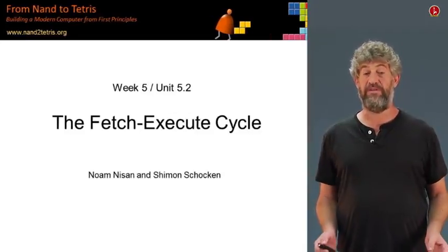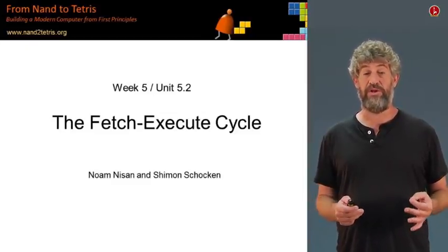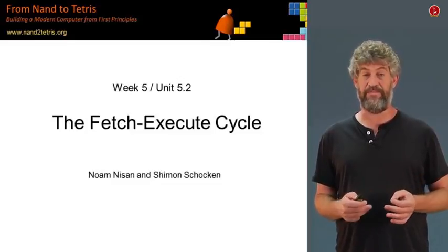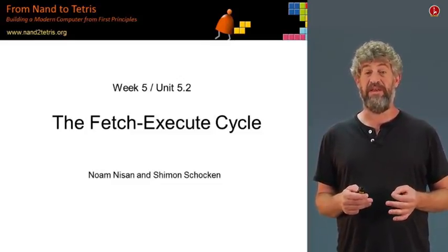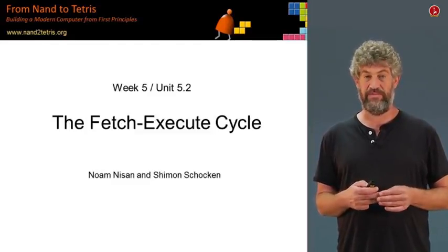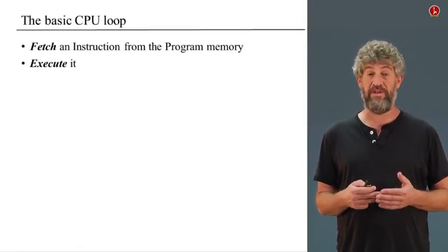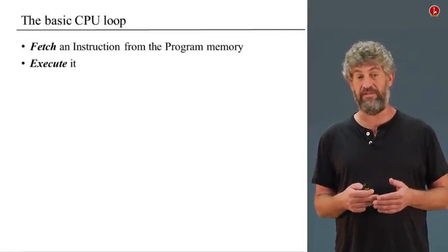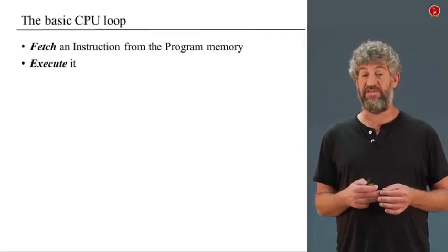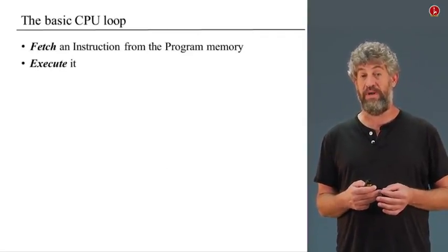In this unit, we're going to talk about the very basic thing that a computer does, which is execute one instruction after the other. We're going to look more specifically at how exactly that is done. It's very simple: you first fetch the instruction that you need to execute, and then you just execute it. And then you repeat. That's the only thing that a CPU does — fetch an instruction, execute it, fetch another instruction, execute it, and so on. Let us look specifically at each of these two stages, what exactly happens there, and how that translates into what happens in hardware.